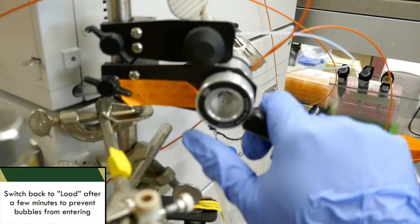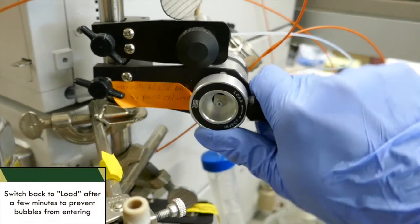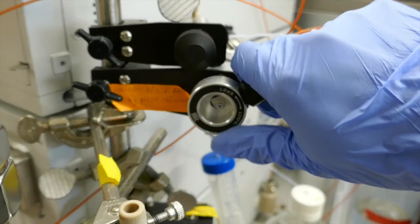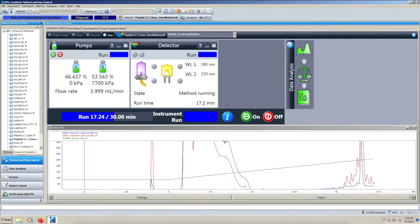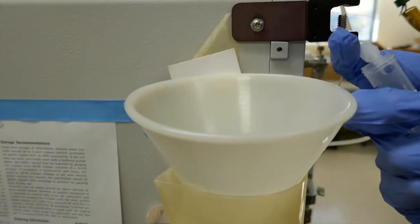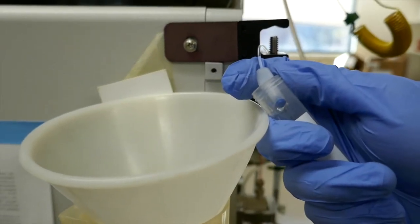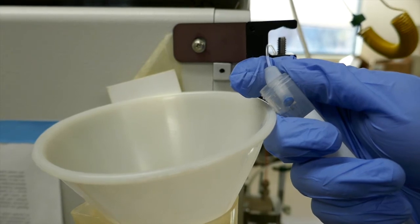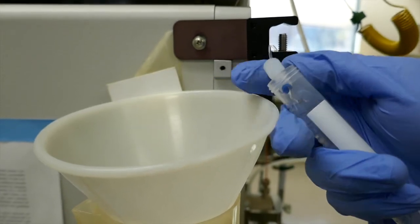Make sure that you switch the injection valve back to the load position after a few minutes to prevent any bubbles from entering the system. Now we're going to let the run continue, and what we're looking for is a 280 peak that represents the protein that we're looking for. Once you get that, you can move the output valve to a tube so that you can collect that sample and allow the run to finish out.